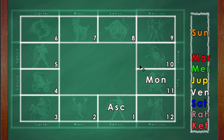In this example, the ascendant is Libra (Thula Lagna) and the moon is in the 11th house. But this moon is the lord of the 10th house, so you'll have to read it as the 10th lord in the 11th house. Maharishi Parashara in BPHS says the person will be endowed with wealth, happiness, and the birth of sons.